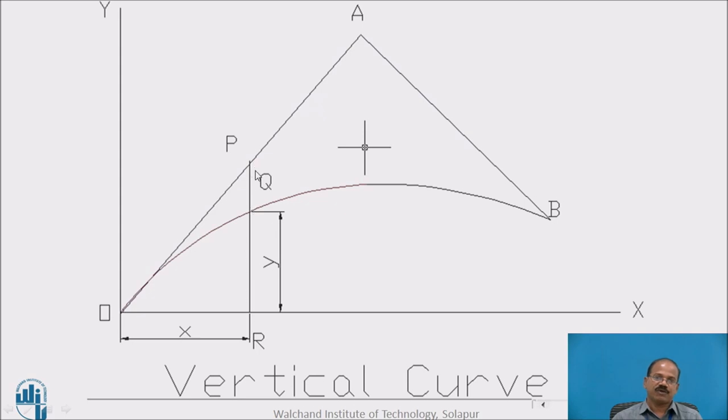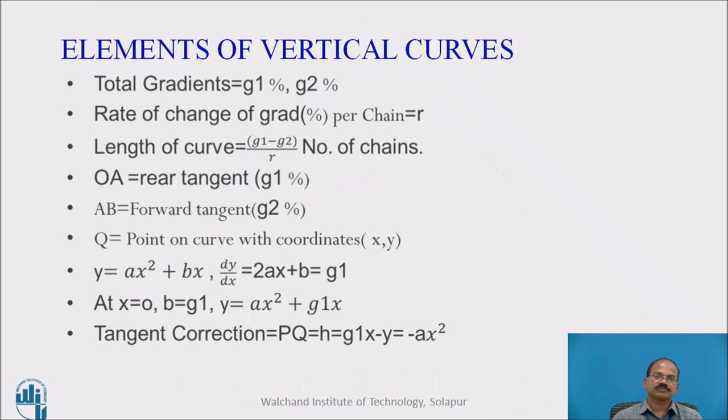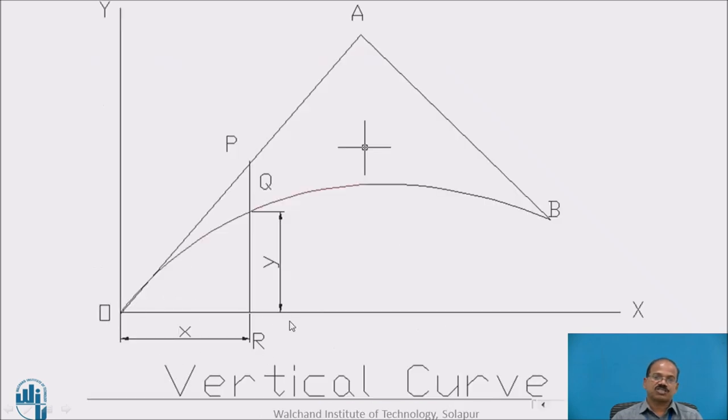This tangent correction will be equal to P to R minus Q to R. P to R can easily be worked out by using the function that we have seen earlier. This particular ordinate can be found by knowing the gradient, and then by knowing this particular Y distance which is a function of X, you can easily calculate Y. By deducting it from total vertical distance we will get this tangent correction.